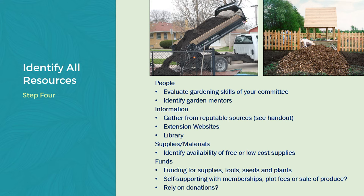Identifying all resources: people, information, supplies and materials, and funding. People are first and foremost — there may be different levels of gardening skills, so you could set up a mentor system where beginner gardeners are partnered with more advanced gardeners. They're really the backbone of the garden and they're going to make it work, look good, and be successful.